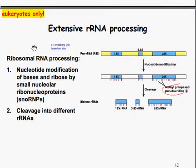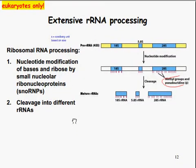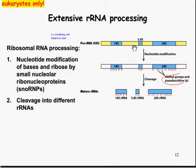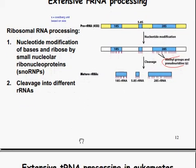Additionally, still in eukaryotes only, there's extensive RNA processing. For ribosomal RNA processing: there is nucleotide modification of bases in ribose by small nucleolar ribonucleoproteins, known as snoRNPs, then cleavage into different rRNAs — it's taken out, spliced, brought together, and assembled into mature rRNAs.